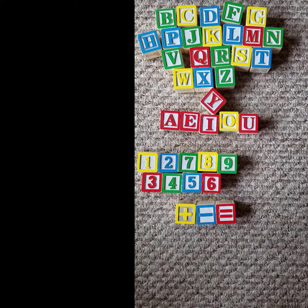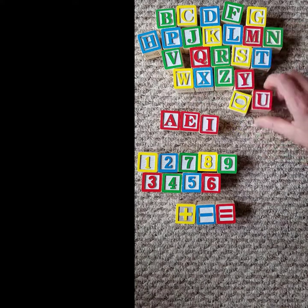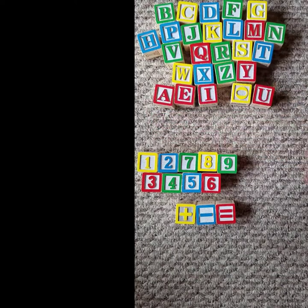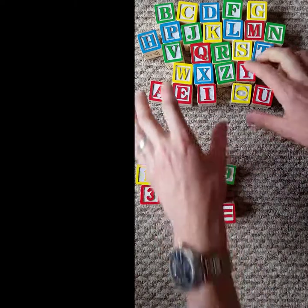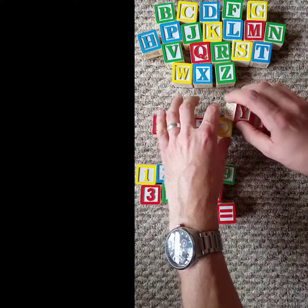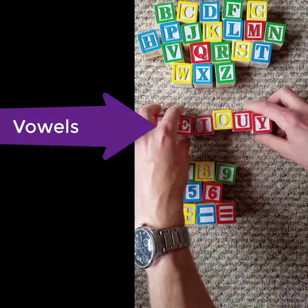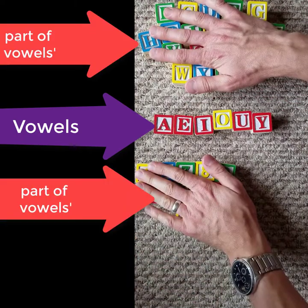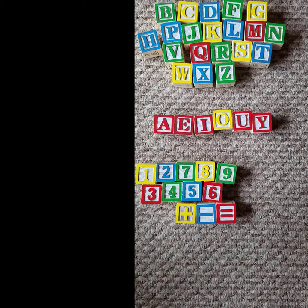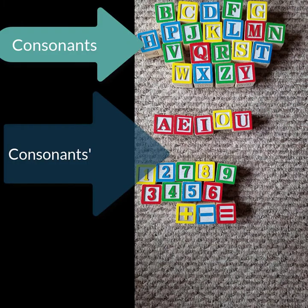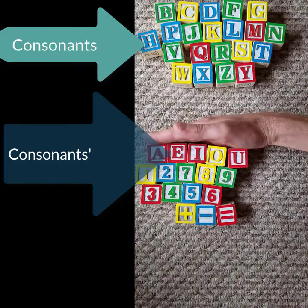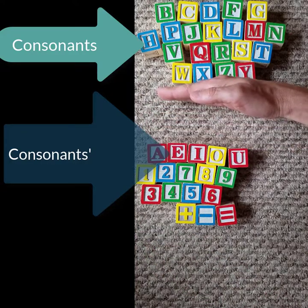Let's talk about complements to sets. Whatever is not in a set is that set's complement. So if we're talking about the set of letters — all of the things above my hand — then the complement to the set of letters is everything below my hand, so these numbers and operators. Or if we want to talk about vowels: the complement to our set of vowels is everything that's not vowels, so this and this belong to our set that is the complement to vowels. If you want the complement to consonants, you've got to be careful because Y is a consonant, so it can't be in the complement because the complement has everything that's not in the set. So everything below my hand is in the complement to consonants, and everything above my hand is a consonant.